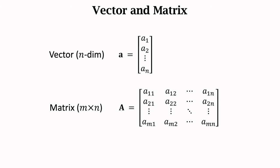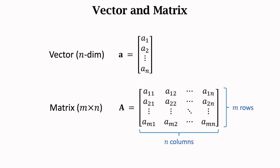Matrices are conventionally represented by uppercase boldface type. Big A is an n by n matrix. It has n rows and n columns. Its ij-th element is denoted by a sub ij. For example, the element in the second row and the first column is denoted by a sub 21.